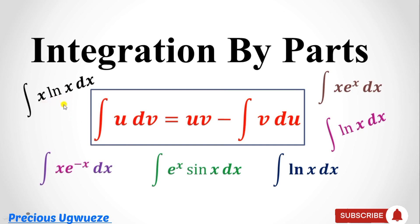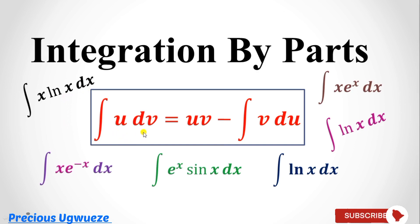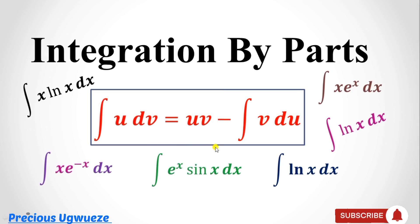You have x and you have ln(x). You are expected to split it into two parts, where one will be called u and the other, including the dx, will be called dv. You then find the values of u, v, and du, so that when you substitute into the formula, you can resolve it to get your solution. Let's quickly look at examples.